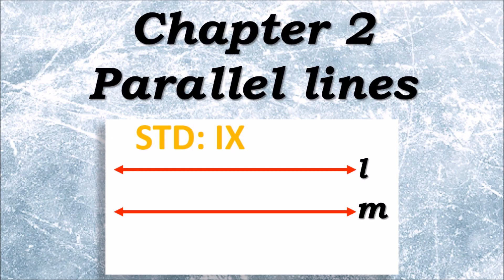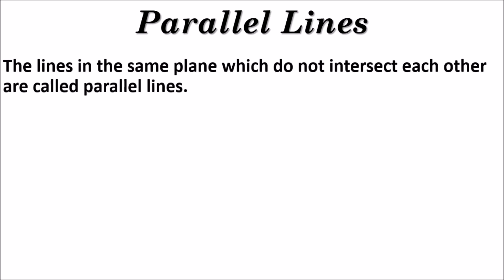Today we will see chapter number two: parallel lines. The lines in the same plane which do not intersect each other are called parallel lines. If the lines do not meet each other, then those lines are called parallel lines.